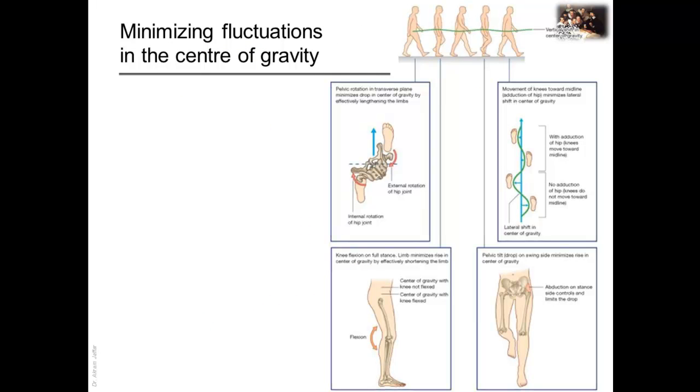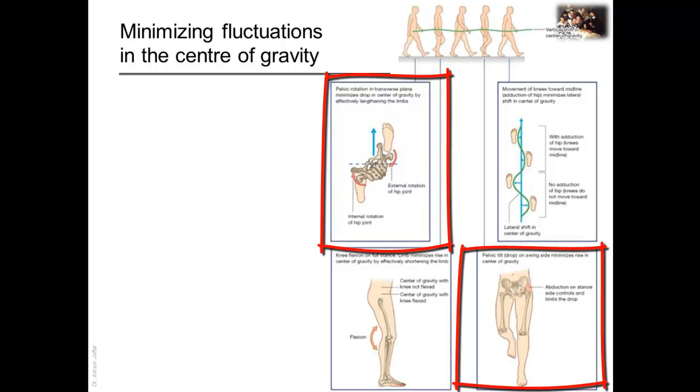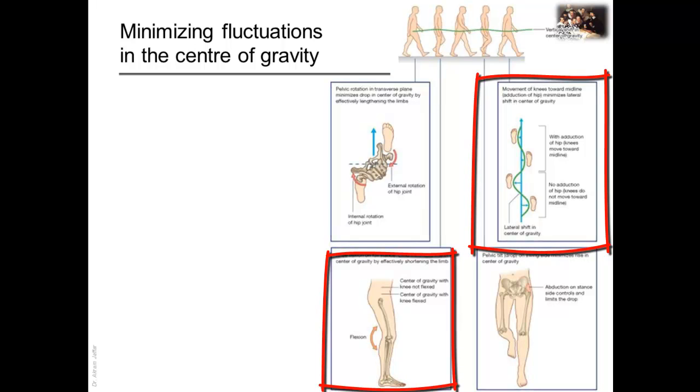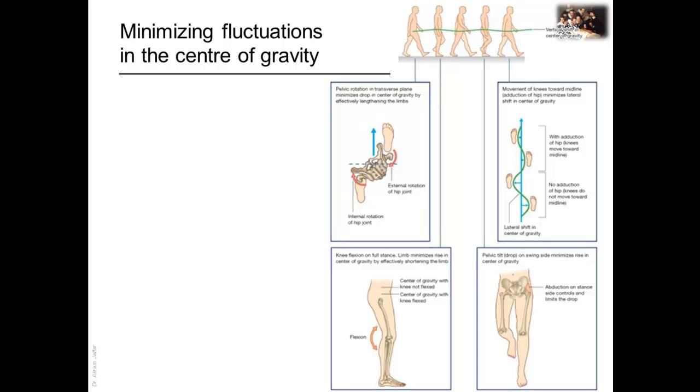During walking, many anatomical features of the lower limbs contribute to minimizing fluctuations in the body's center of gravity, and thereby reduce the amount of energy needed to maintain locomotion and produce a smooth and efficient gait. These include pelvic tilt in the coronal plane, pelvic rotation in the transverse plane, movement of the knees toward the midline, flexion of the knees, and complex interactions between the hip, knee, and ankle joints. As a result, during walking, the body's center of gravity, which is located just in front of S2 vertebra, normally fluctuates only 5 cm in both vertical and lateral directions.